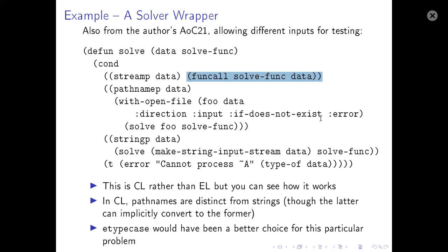And calling the actual solve function on a stream. There's a cleaner way of doing that in Common Lisp with a type-case that says: if the type of the data is a stream, call this; if it's a pathname, call the other. In Emacs you haven't got pathname as a special type — you'd pass it a string as a path name, but you can do regular expression matching on slashes to check whether it's a file path.